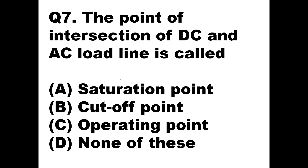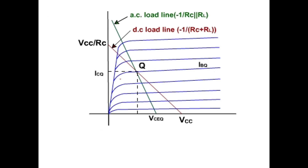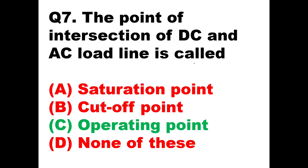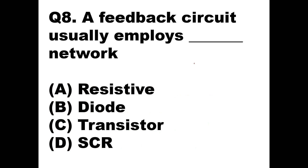Question number seven: the point of intersection of the DC and AC load lines is called what? With respect to BJT, we have studied both the DC load line and the AC load line. The point of intersection of these two lines is called the operating point, or Q point. This is the point where you can operate your circuit for faithful working. So operating point, or Q point, is the answer.